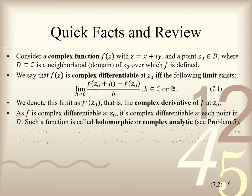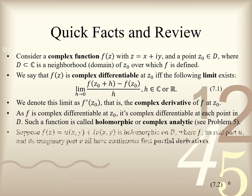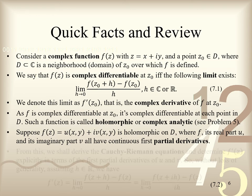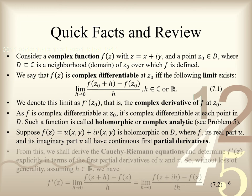Now suppose we write the holomorphic function f of z as u of xy plus i times v of xy, where f, its real part u, and its imaginary part v all have continuous first partial derivatives. From this, we shall derive the Cauchy-Riemann equations, and determine f prime of z explicitly in terms of the first partial derivatives of u and v with respect to both x and y. Without loss of generality, assuming h is real, by definition we have the following for f prime of z in 7.2. Note that in the first equality, we are approaching the limit in the horizontal direction parallel to the real x-axis in the complex plane, while in the second equality, we are approaching the limit in the vertical direction parallel to the imaginary iy-axis in the complex plane.